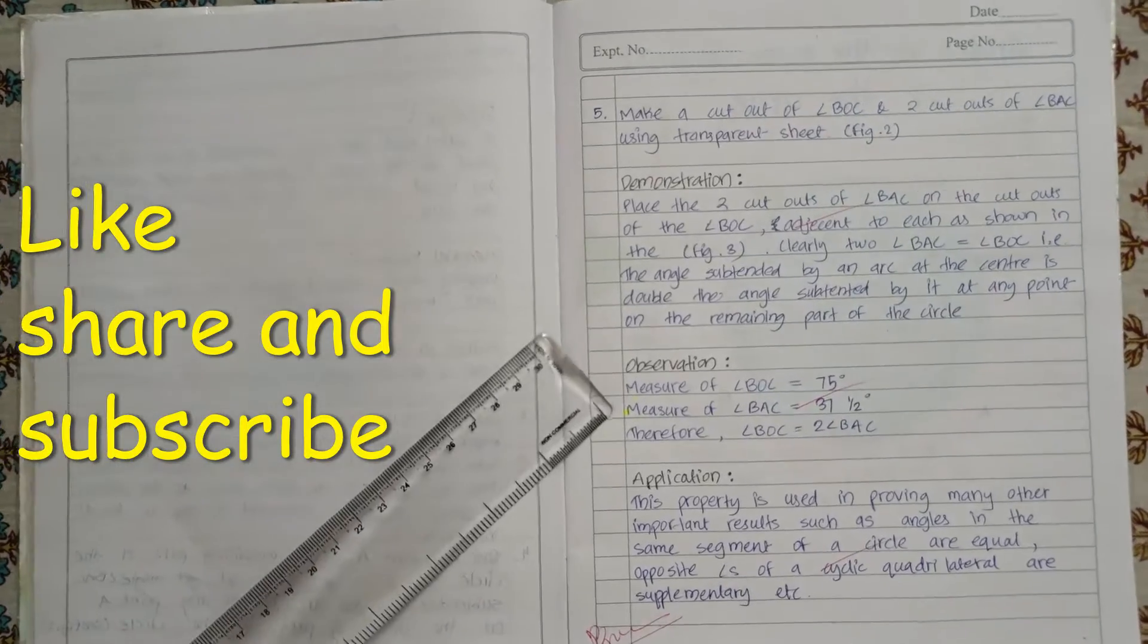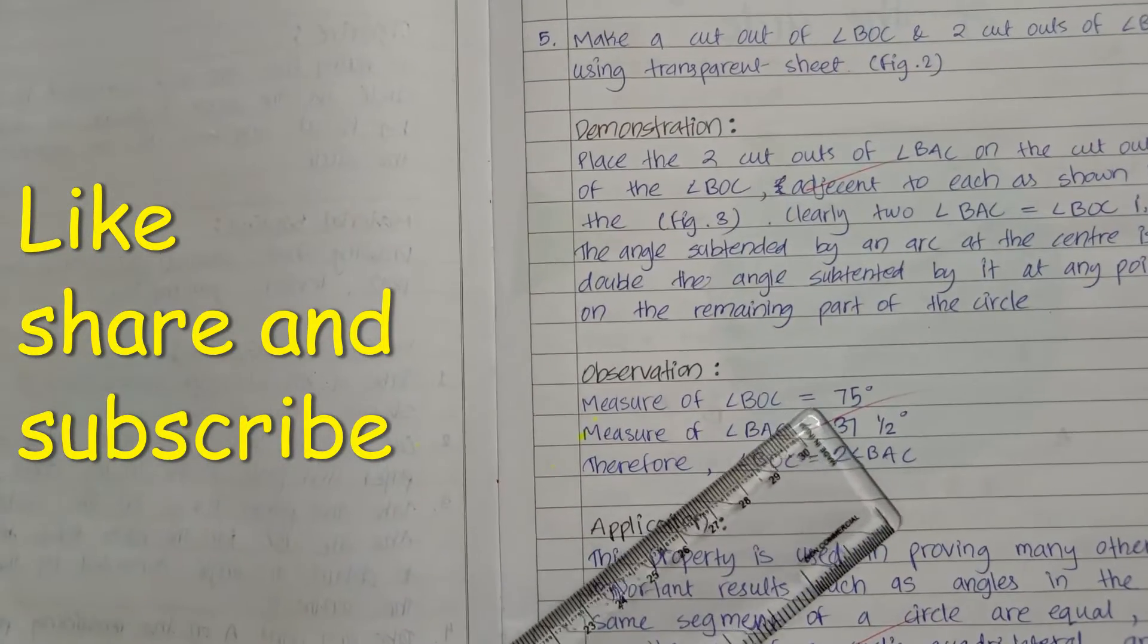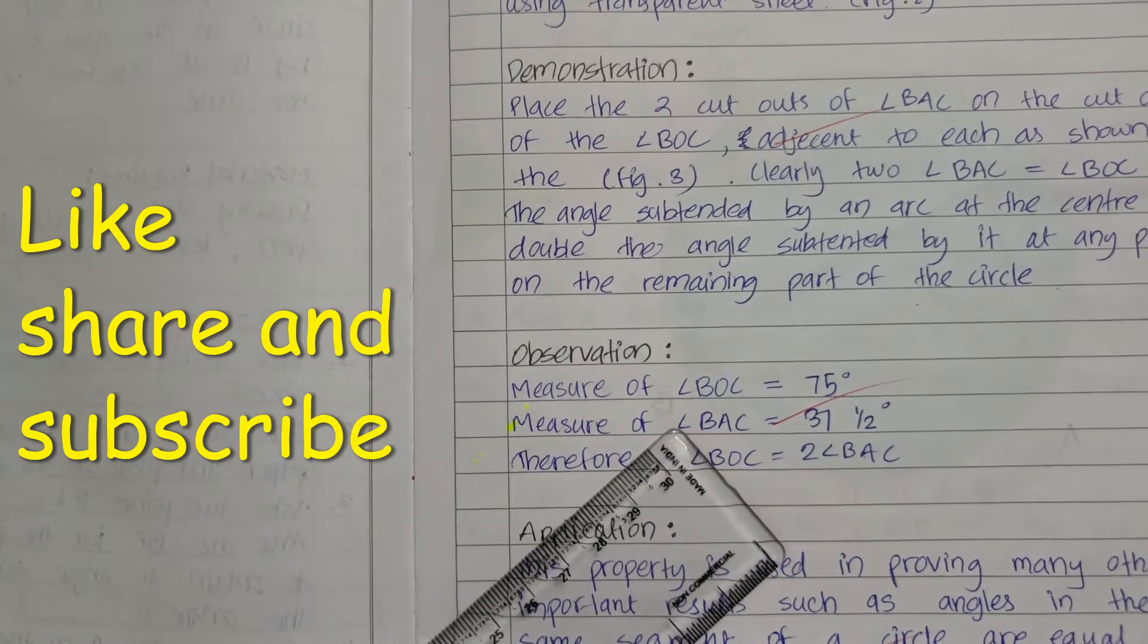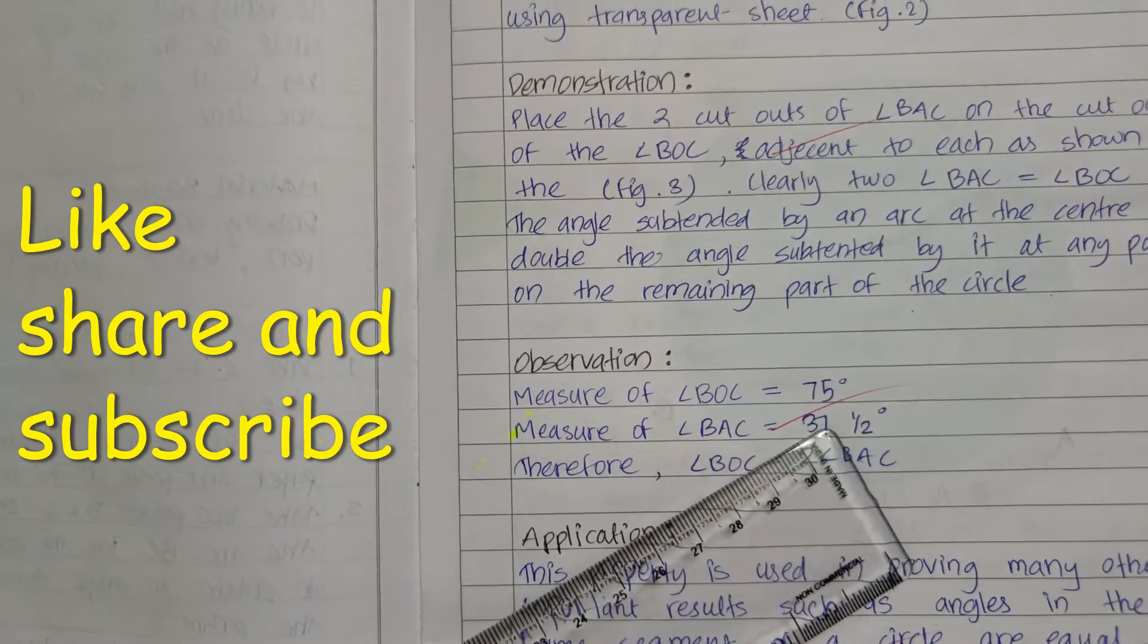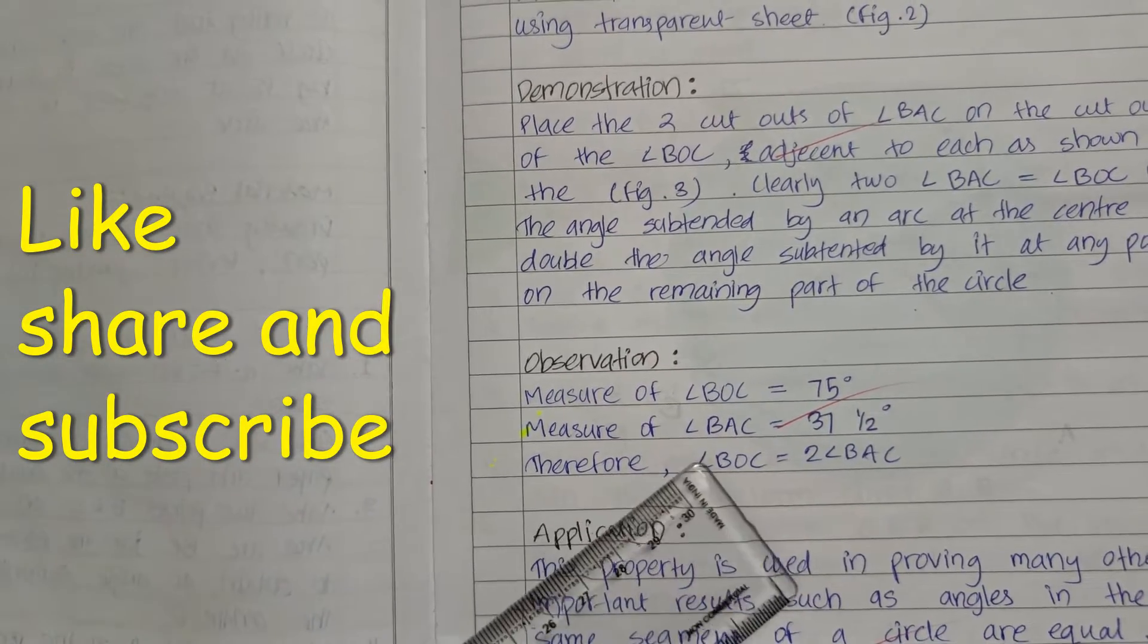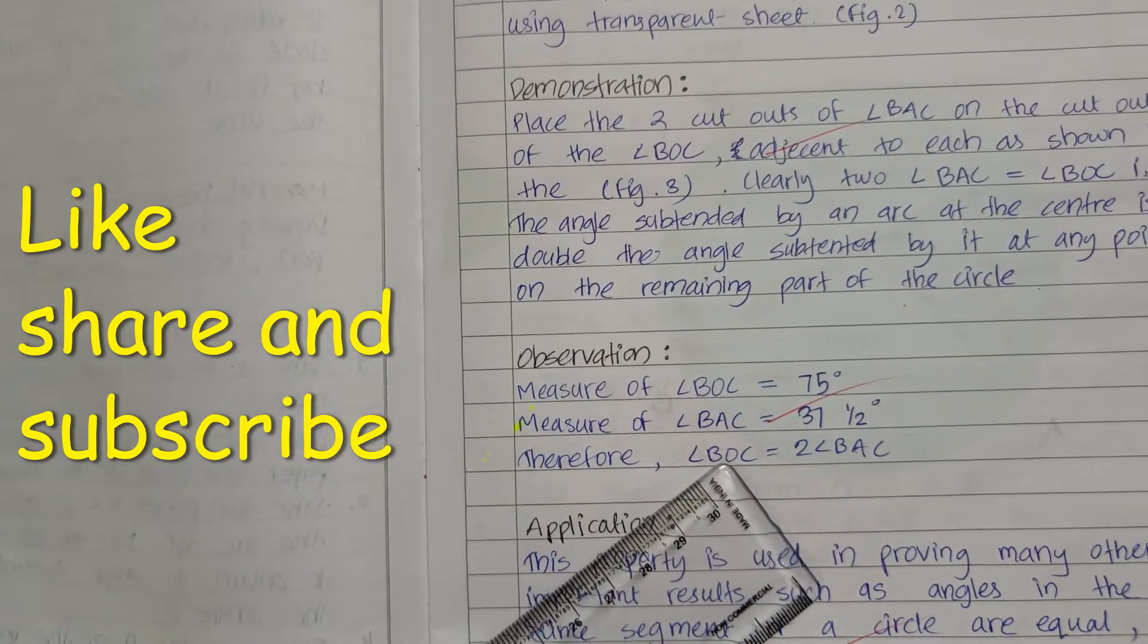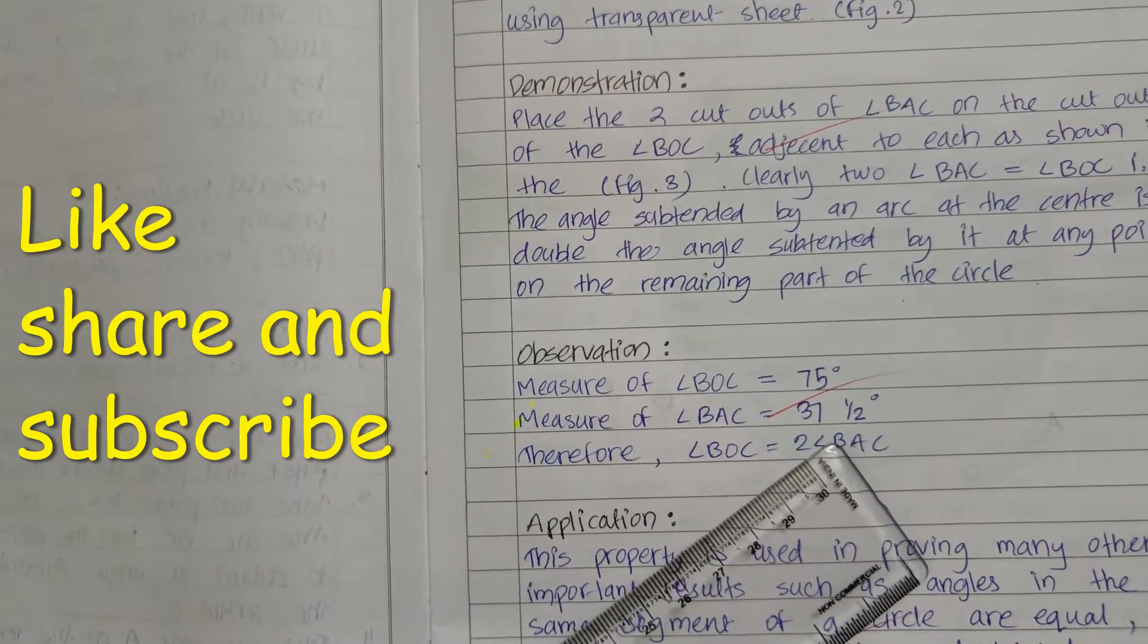Observation. Measure of angle BOC is equal to 75 degrees. Measure of angle BAC is 37 and a half degrees. Therefore, angle BOC is twice of angle BAC.